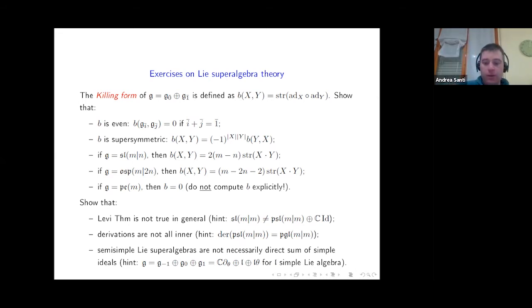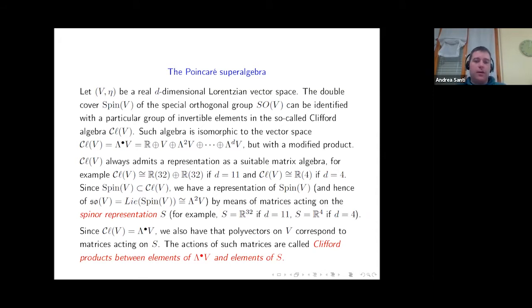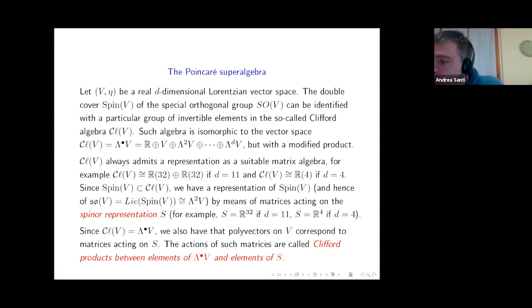Let's go to the Lie superalgebra of interest in physical theories. We start with a real D-dimensional Lorentzian vector space V with metric η. Consider the special orthogonal group, which is not simply connected, so it admits a double cover Spin(V). The spin group can be identified inside the Clifford algebra. As a vector space, the Clifford algebra is just the exterior algebra of V, but with a modified product: for orthogonal basis elements, the product works like the exterior algebra, but the square of a basis element e_i equals minus the norm squared of e_i. So in the Clifford algebra you have both a wedge operation and a contraction operation.